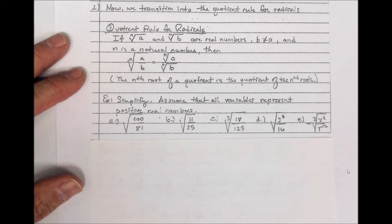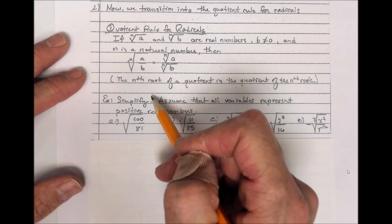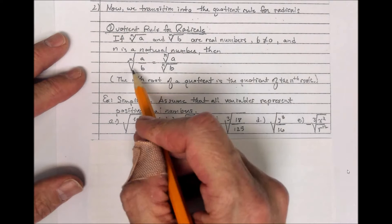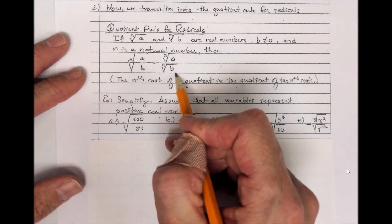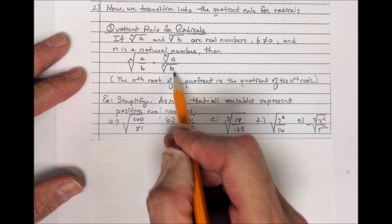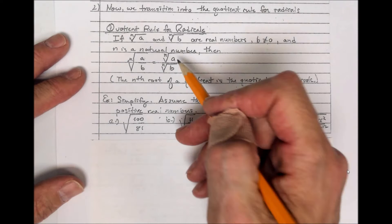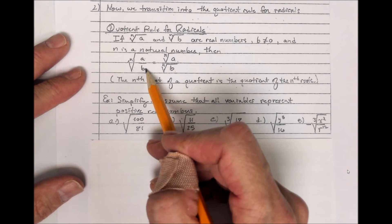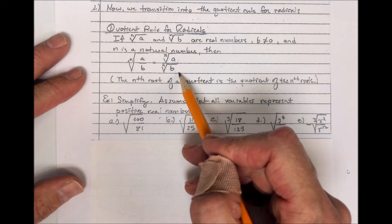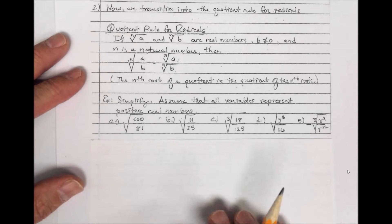The quotient rule for radicals says: if the nth root of a and the nth root of b are real numbers, b is not equal to 0, and n is a natural number, then the nth root of a divided by b equals the nth root of a divided by the nth root of b — the nth root of the quotient is the quotient of the nth roots. b can't be 0 because you can't divide by 0. So you break the quotient into the nth root of the numerator divided by the nth root of the denominator.